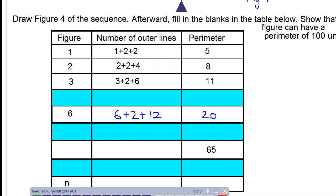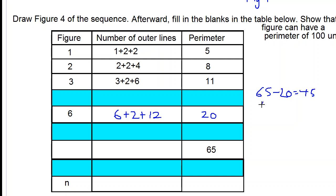so what we do is we subtract twenty from sixty-five, and we get forty-five, then we divide forty-five by three, and this gives us fifteen.